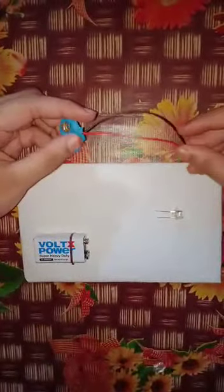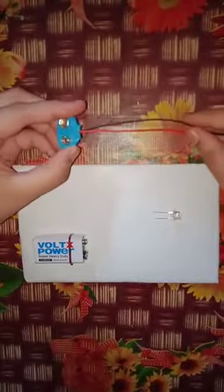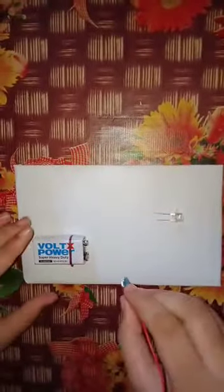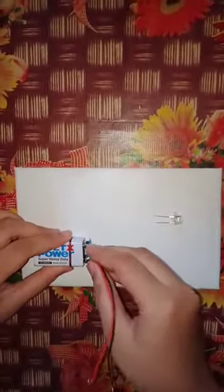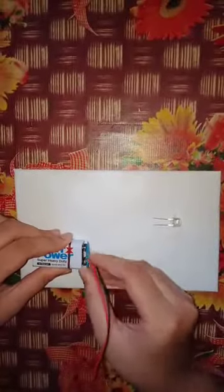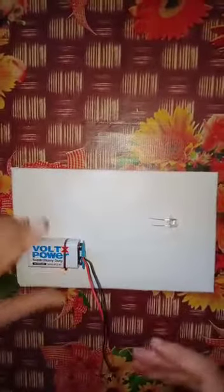First, we have to connect the two wires with the holder. We connect the wire to the battery. Then, we connect the red wire to the positive terminal, and then we touch the negative terminal with the other wire.